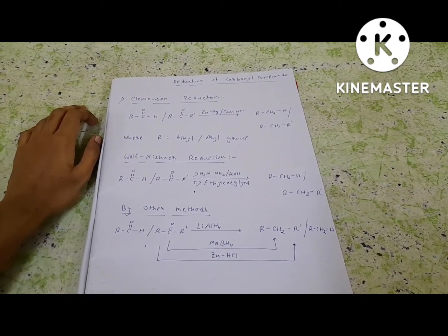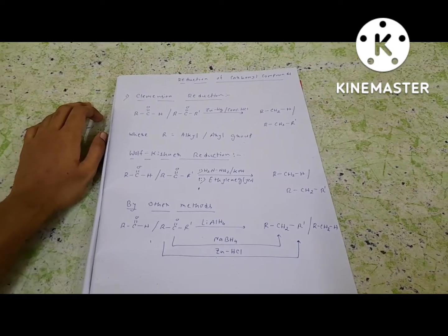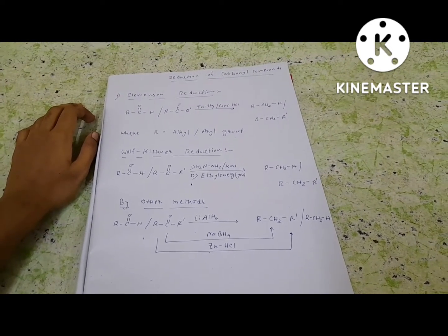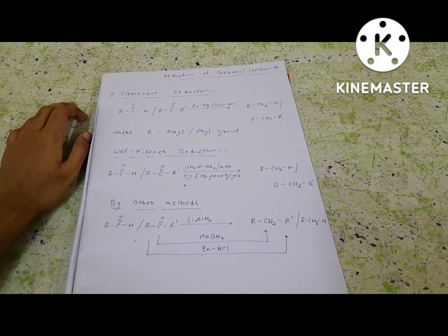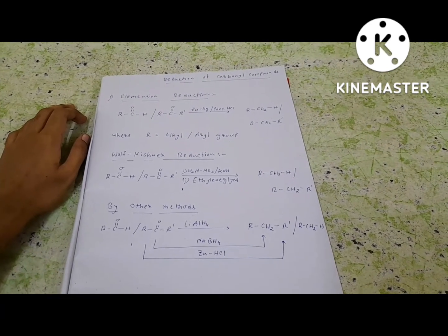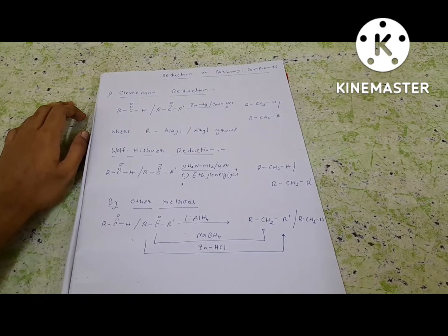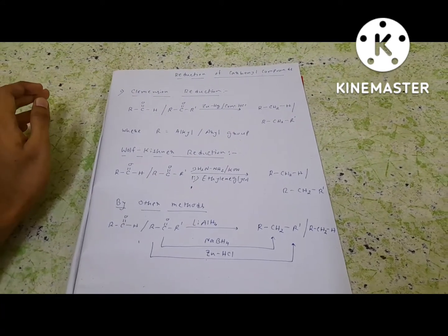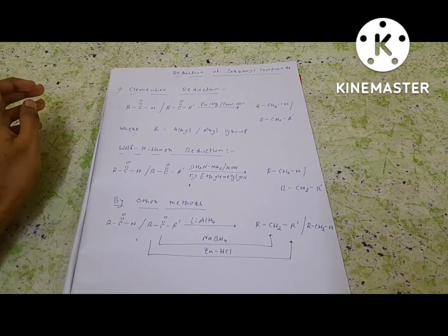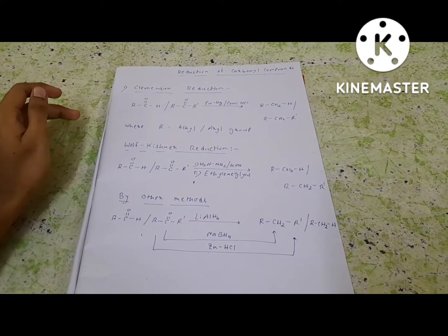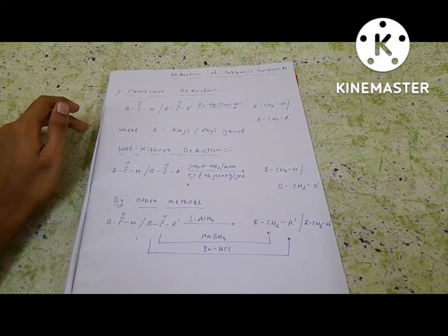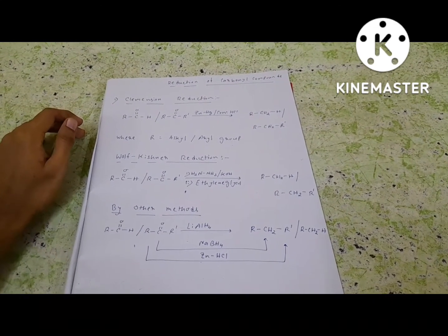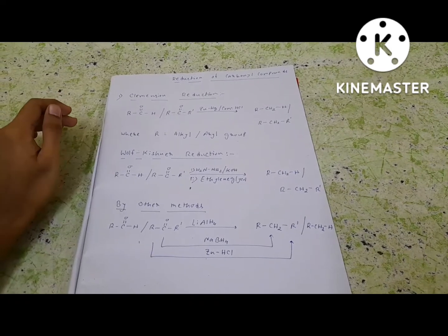By other methods, we can also reduce carbonyl compounds using lithium aluminium hydride (LiAlH₄), which is the strongest reducing agent in all of organic chemistry. LiAlH₄ can reduce any kind of organic compound — aldehyde, ketone, and also carboxylic acid, ester, amide, and acid halide such as acid chloride.